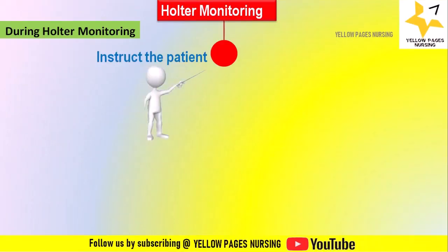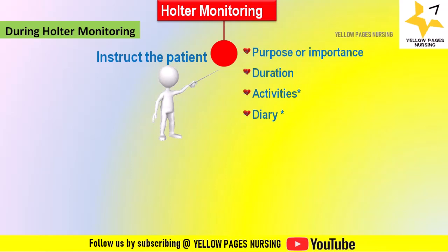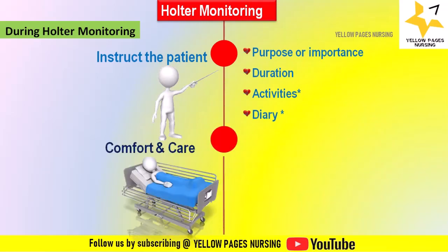During Holter monitoring, instruct the patient regarding the purpose and the importance of continuous wear. Instruct the patient to push the button on the Holter monitor when experiencing symptoms. If the patient is not hospitalized, explain that they can carry on with their normal activities while wearing the monitor, including work, exercise, and sleep. Activities to avoid include swimming, which may dislodge the electrodes. Instruct the patient to keep a diary or log sheet to record daily activities, symptoms, and any notable events.